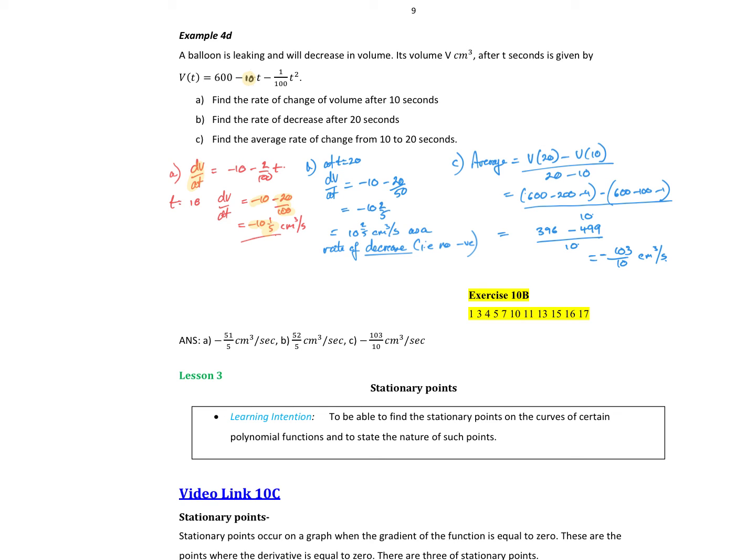So the rate of decrease, the change in dv dt after 20 seconds. So at t equal to 20, put that into the same rule, I'm going to have negative 10 minus 40 on 100, which is negative 10 and two-fifths. But because we've been told it's a rate of decrease, our answer is positive because a decrease itself implies a negative value. So it's positive 10 and two-fifths centimeters cubed per second.